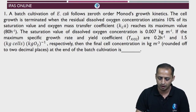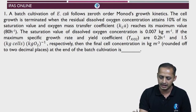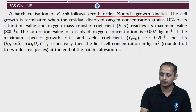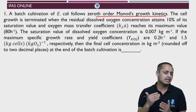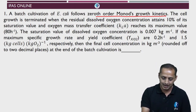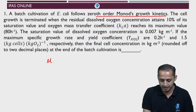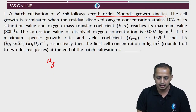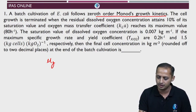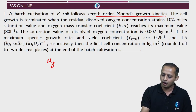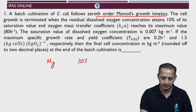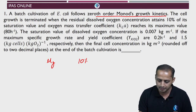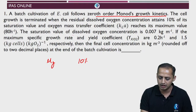First question: a batch cultivation of E. coli follows 0th order monogrowth kinetics. So here, the growth has attained a maximal level, which means the substrate concentration is not limiting — the specific growth rate is at its maximum μ_max. The cell growth is terminated when the residual dissolved oxygen concentration attains 10% of its saturation value.